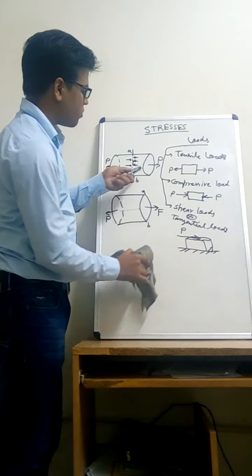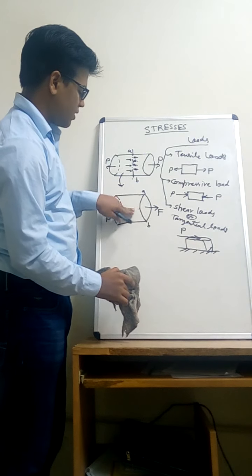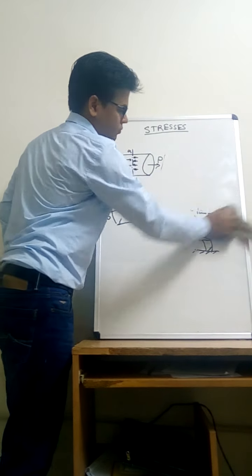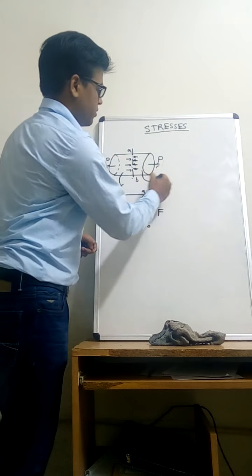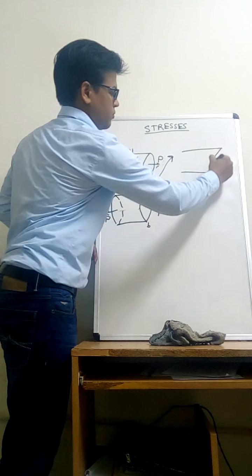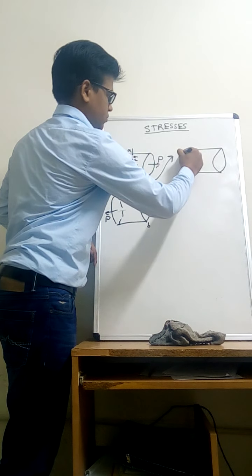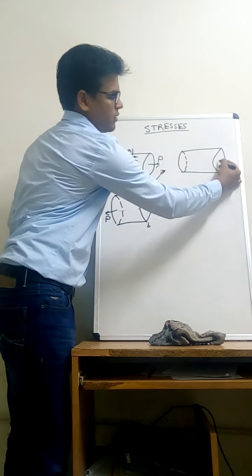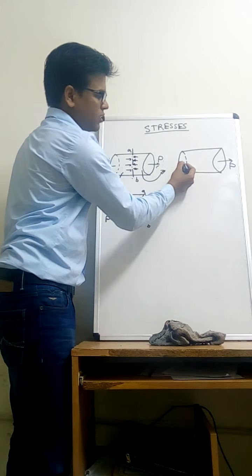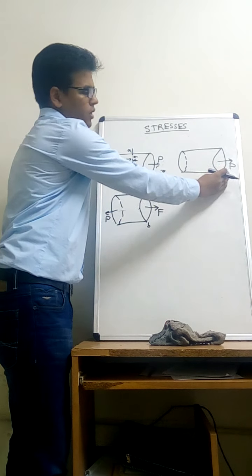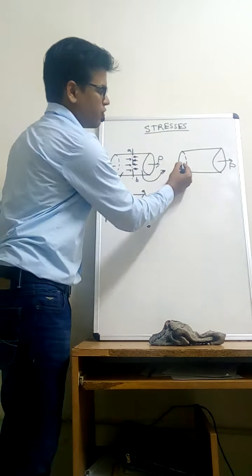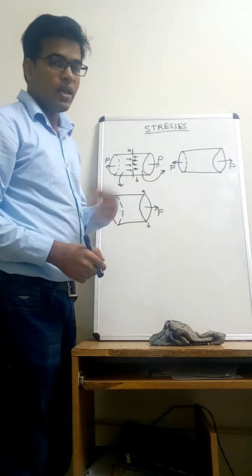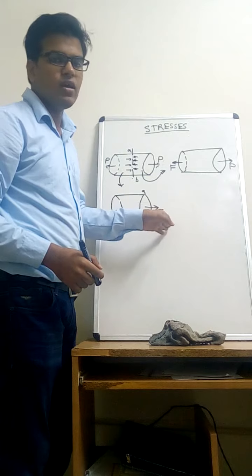I am drawing the exaggerated diagram for this part. On this face, the tensile force P was acting, and on this face again, internal resisting force of the same tensile nature will be developed. The next question is: what will be the value of this internal resisting force?